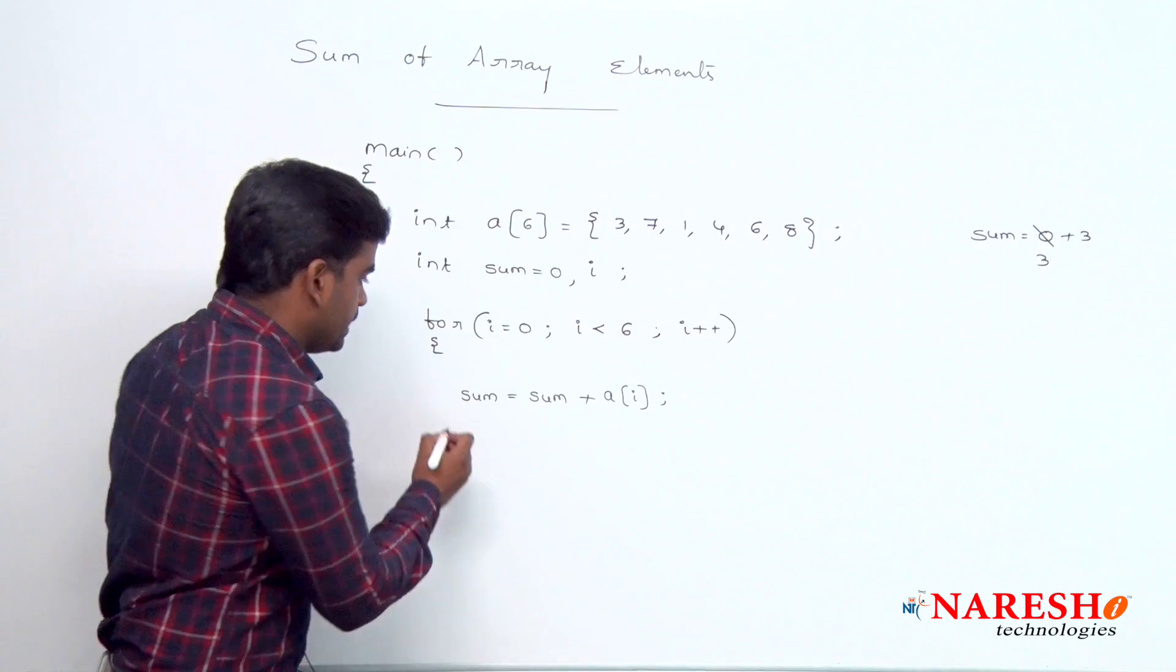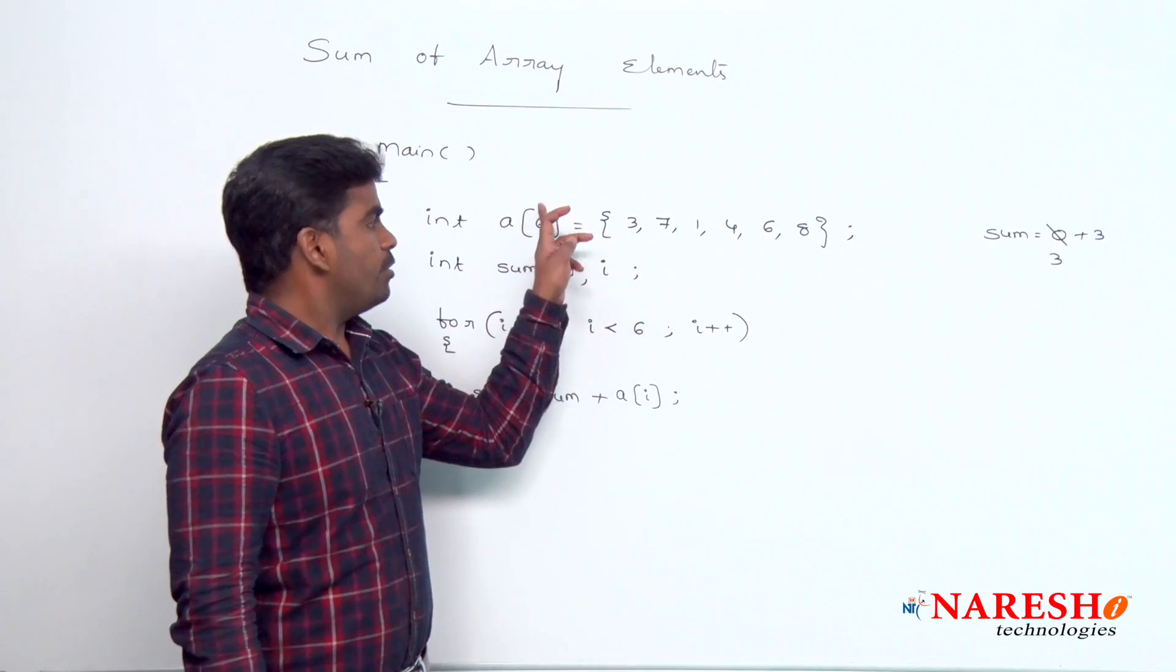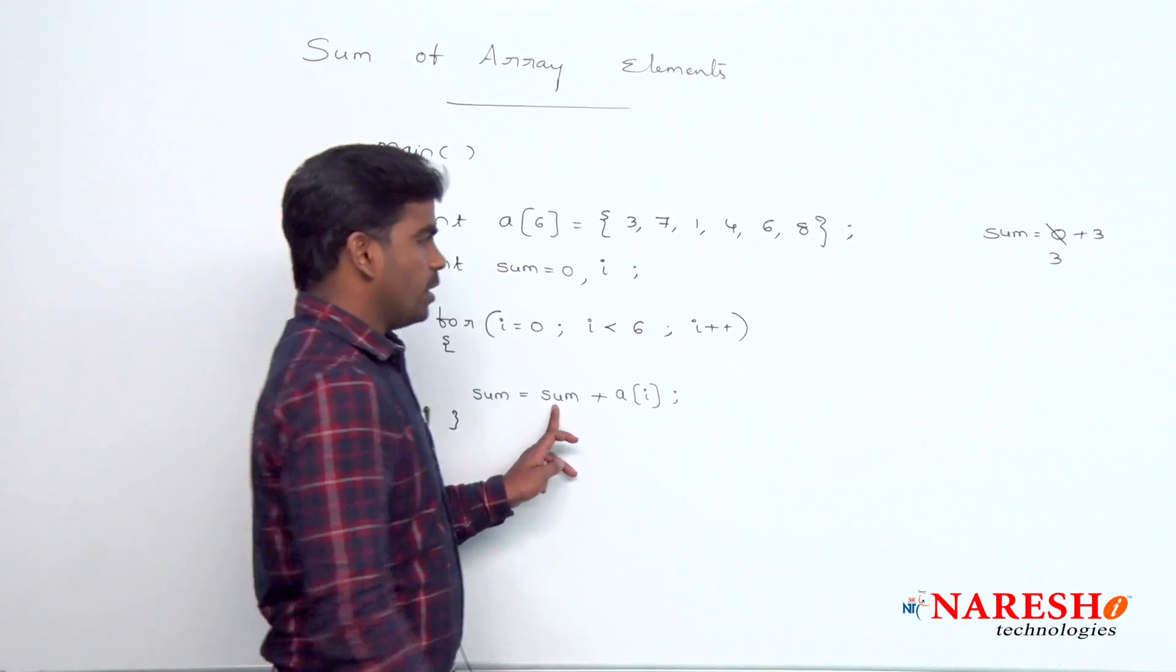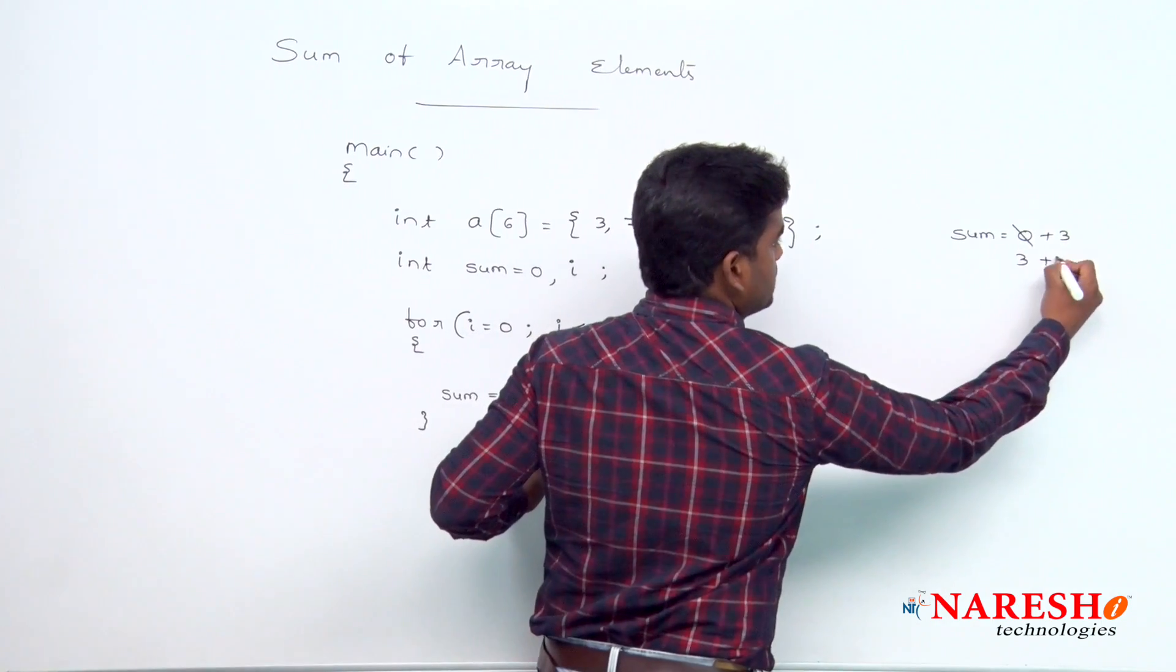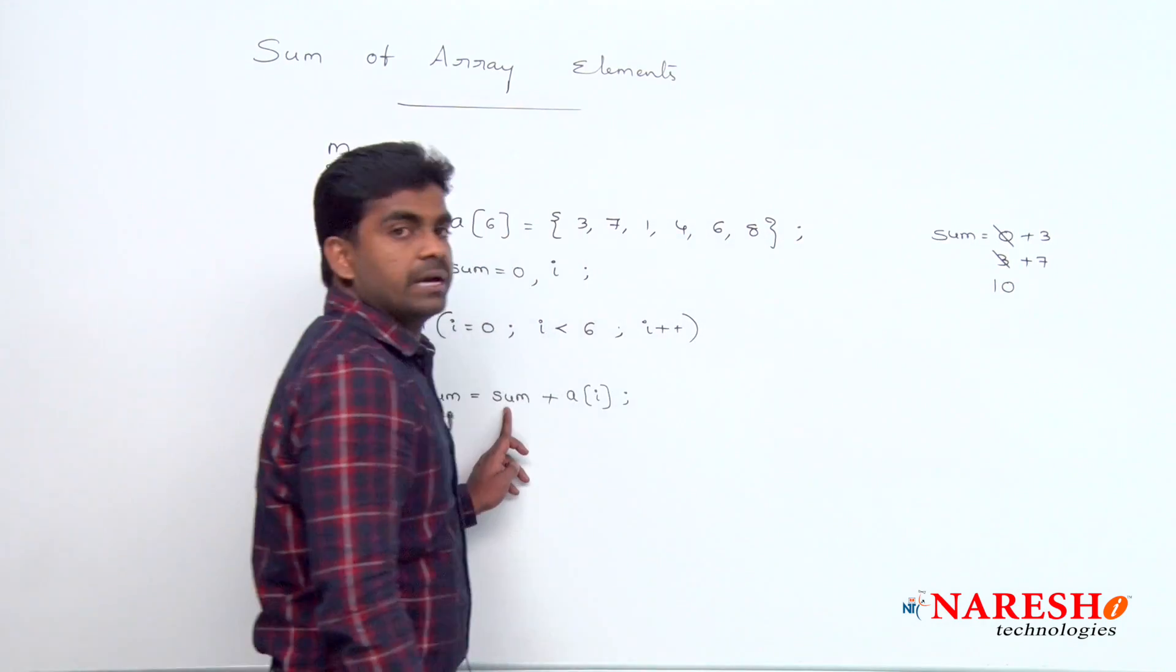And next one, i value increases, i value becomes 1. A of 1 means what? The value is 7. That 7 will be added to sum. Already sum value is 3, 3 plus 7. The value will go and store into this sum. Value becomes 10.